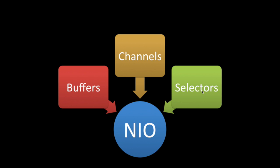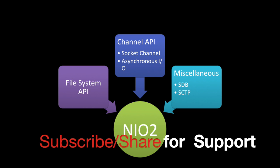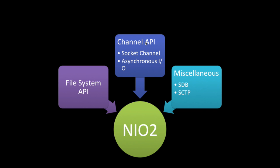What NIO2 offers is a file system channel API and miscellaneous file system API. It will deal with the new package java.nio.file, which is a replacement of java.io.file. Channel API will deal with socket channel and asynchronous I/O — the new way of writing I/O programming — and there are a few protocol updates: SDB and SDP.